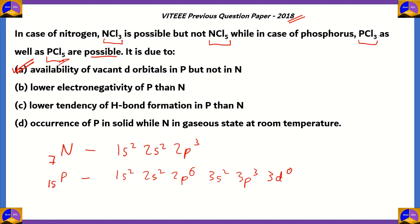Lower electronegativity means that it will be less reactive, but that does not impact here—that is not the correct reason. Lower tendency of H-bond formation—we're talking about halogens, so again this is incorrect. Occurrence of P in solid state while N is in gaseous state at room temperature—again, that is due to physical properties, so option D is incorrect. The right option is option A, availability of vacant d orbitals in P but not in N. This is because nitrogen's configuration ends in the second shell, while phosphorus's configuration ends in the third shell, and in the third shell you have d orbitals, whether they're filled or vacant.